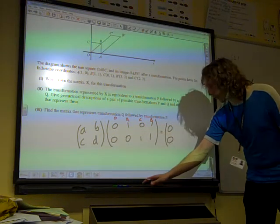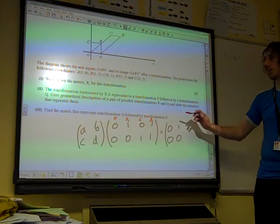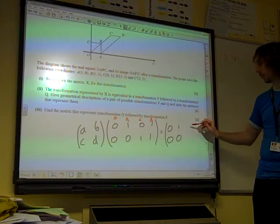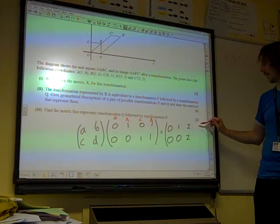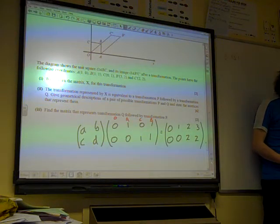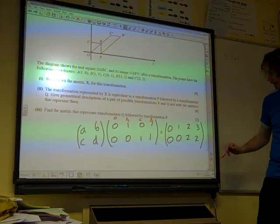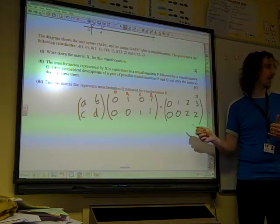The image of A has remained the same, that is at 1, 0. The image of C is now at 2, 2. And the image of B is now at 3, 2. So that's what it produces. And now we just need to try and think, in terms of matrix multiplication, how these things would fit together.